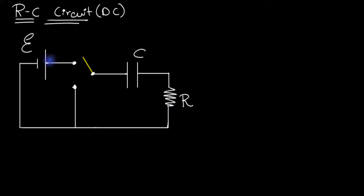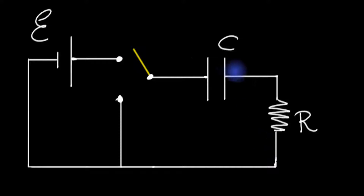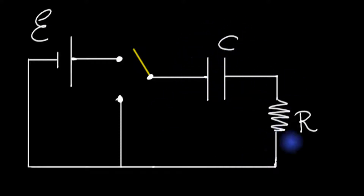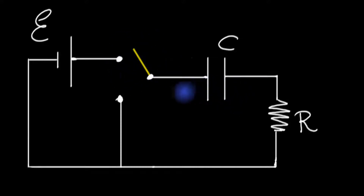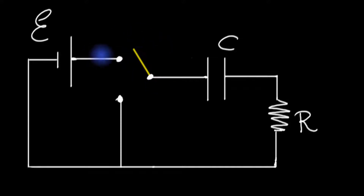Consider this circuit. We have an ideal cell with an EMF E. Imagine that this capacitor is uncharged and there is no current flowing in the circuit because the circuit is not yet closed. The question now is: what's going to happen the moment I close the switch?